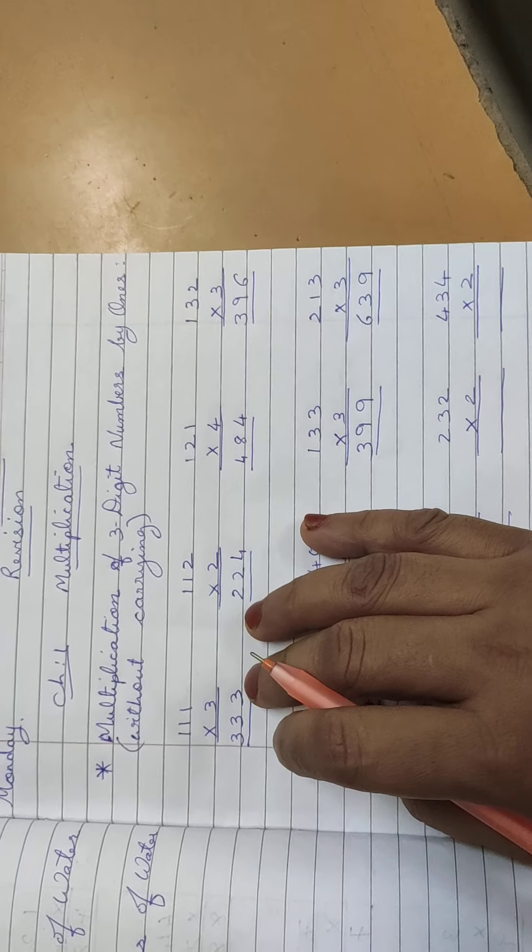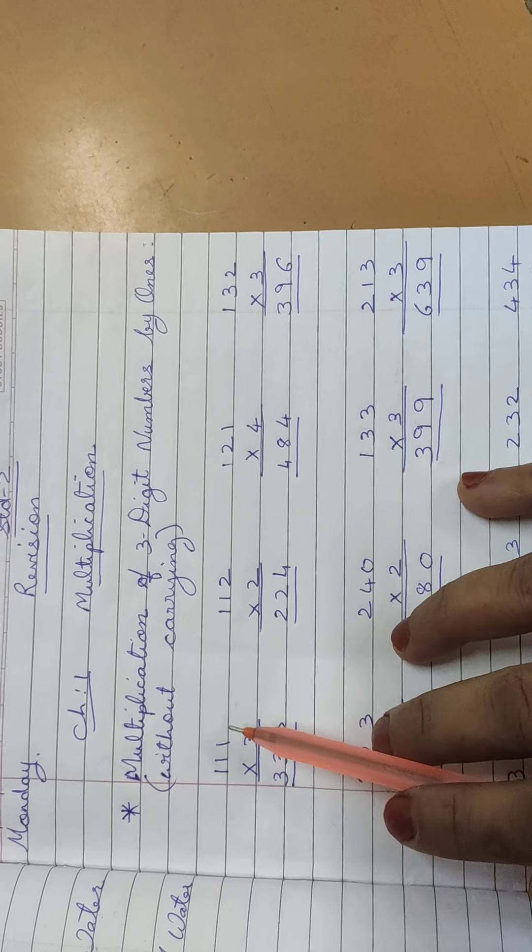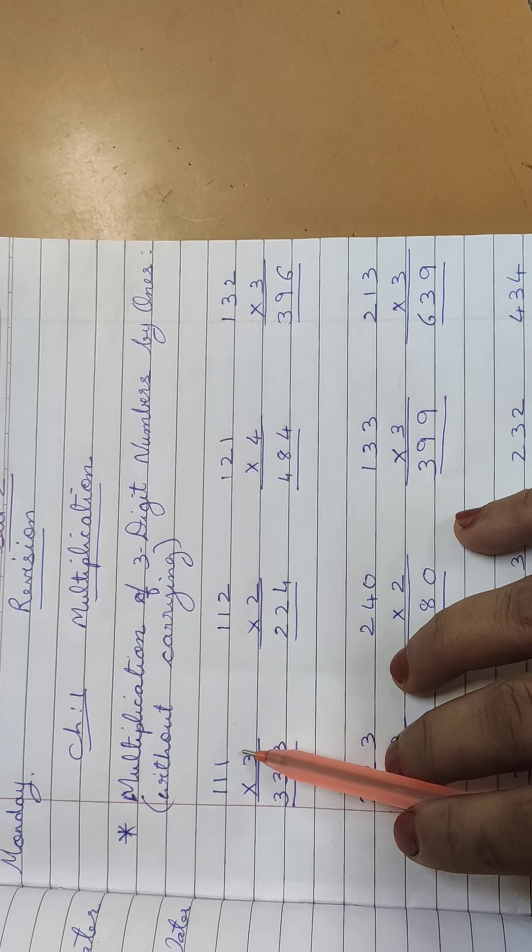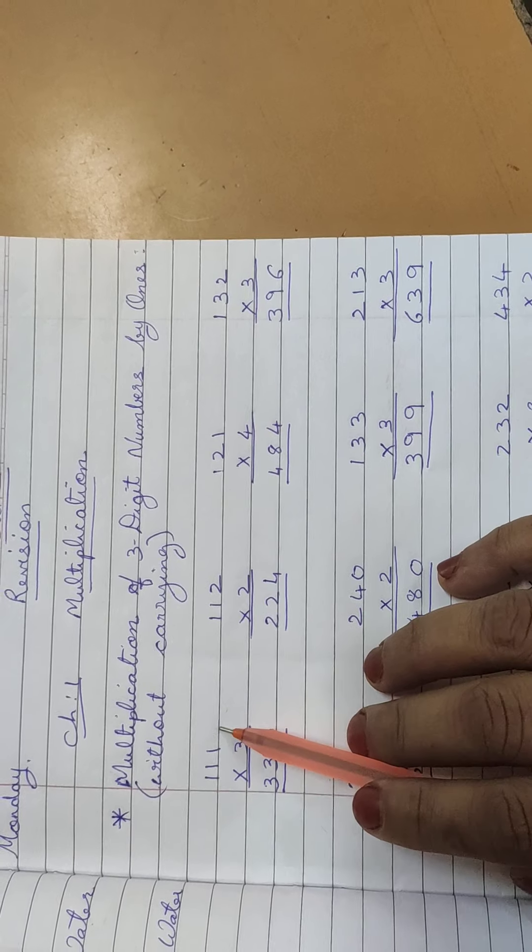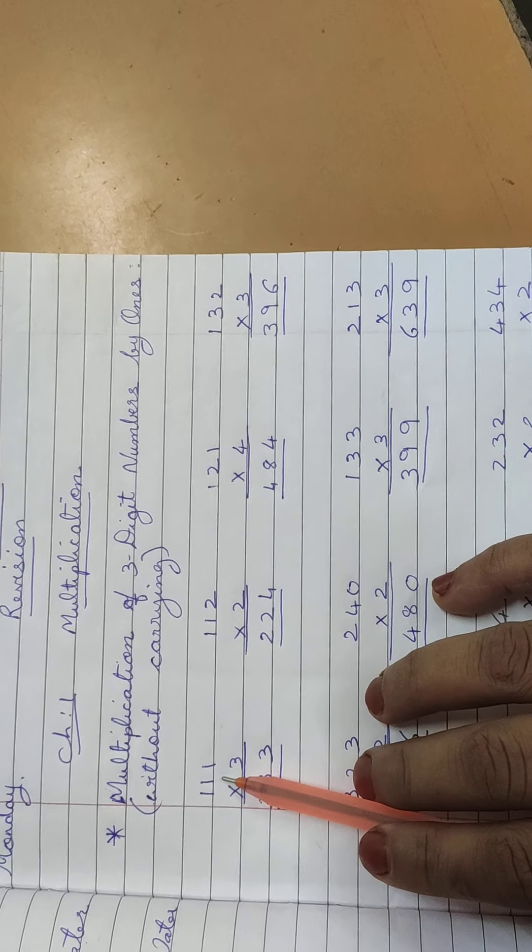You need to write the heading like this. These are our multiplication sums. We've completed 1 digit and 2 digit sums. Now 3 digit - look 1, 1, 1, 111 is 3 digit sums.